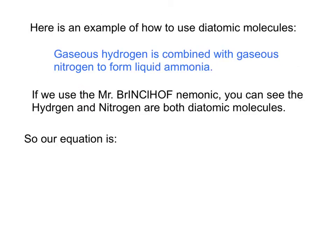Now here is a little practice. The reaction statement says gaseous hydrogen is combined with gaseous nitrogen to form liquid ammonia. So when we write this we say: I have hydrogen plus nitrogen, which creates ammonia. And the symbol for ammonia is NH₃.